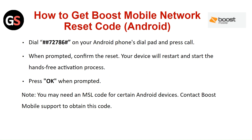How to get the Boost Mobile Network Reset Code for Android? Dial ##72786# on your Android phone's dial pad and press call. When prompted, confirm the reset. Your device will restart and start the hands-free activation process. Press OK when prompted.